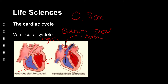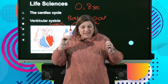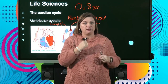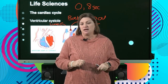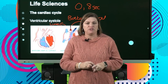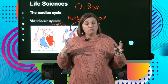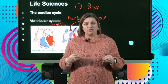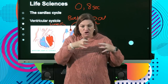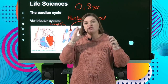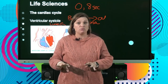Most of these things happen in 0.8 seconds — that's how quick each beat is. That is really, really quick. Your heart is doing that all of the time, constantly. So that is called the cardiac cycle. It happens all the time: in, top, bottom, out. In, top, bottom, out — there's that pattern, that cycle.